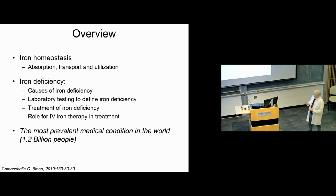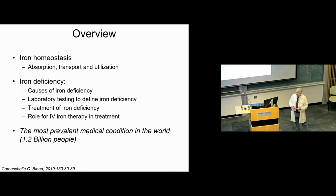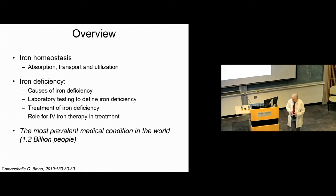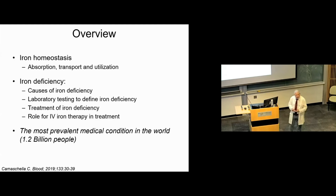What we will talk about today is basic iron homeostasis — how we absorb, transport, and utilize iron. It's a really active area of research and it dovetails into some newer clinical opportunities to improve iron deficiency anemia and iron overload. We'll talk about iron deficiency, some of the causes, the laboratory approaches, and then treatment. The role of oral and IV iron is something we think about a lot. The most prevalent medical condition in the world is iron deficiency, affecting at least 1.2 billion people today.